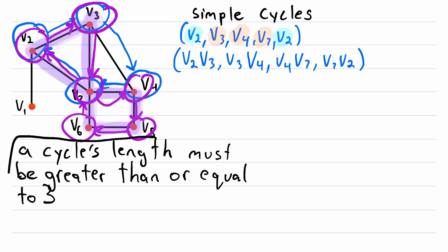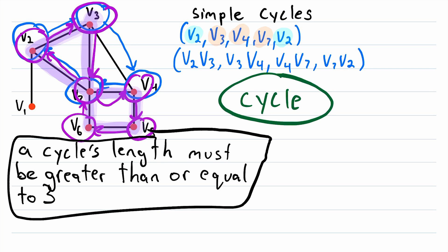And remember that by either definition, a cycle's length must be greater than or equal to three, and its length is the number of edges traversed in the cycle. The term cycle is also often used not to describe a way of moving through a graph, but to describe a specific type of graph. We'll go over that more in detail in another lesson, but I did want to mention it briefly here.